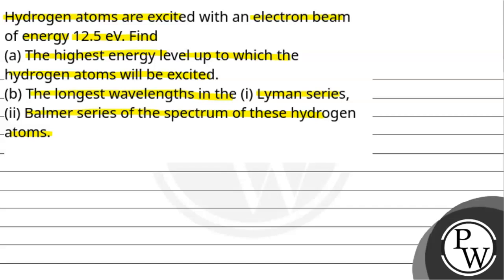So here we go. Hydrogen atoms are excited with an electron beam of energy 12.5 eV, and we need to find the highest energy level, longest wavelength in Lyman series and Balmer series. But before that, let's talk about the key concepts which we are going to use here for this question.